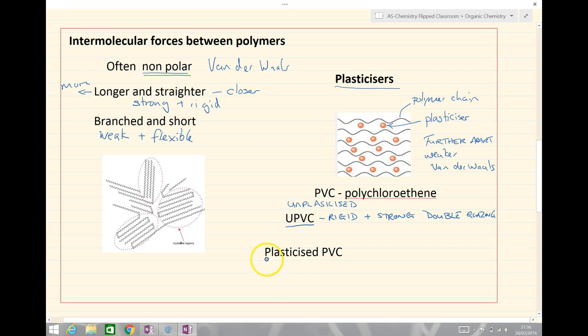Plasticized PVC on the other hand has these molecules which end up getting between the chains, and the chains become further apart, weaker van der Waals, and so it becomes weaker and more flexible.